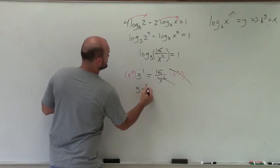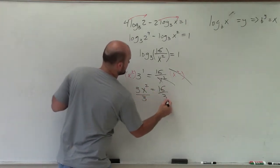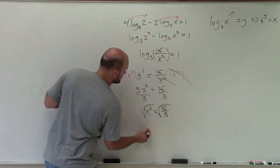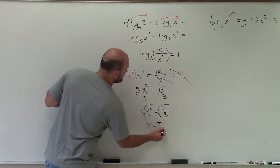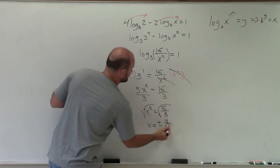I'm left with 3x squared equals 16. Now, divide by 3, and I have x squared equals 16 over 3. Take the square root, and I have x equals plus or minus, so square root of 16 is 4 divided by square root of 3.